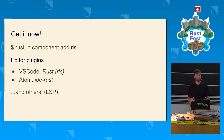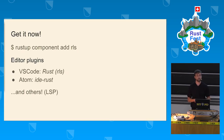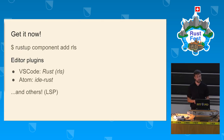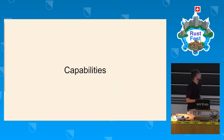You can get it now easily — almost everyone has rustup installed, so the only thing you need to do is run `rustup component add rls`. If you have an LSP-compliant extension in an editor, you're good to go. For Visual Studio Code, the officially supported extension is Rust-RLS, and for Atom you get the same functionality by installing the IDE-Rust package.